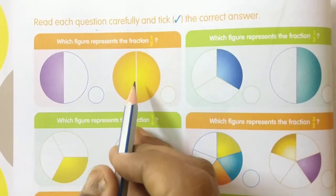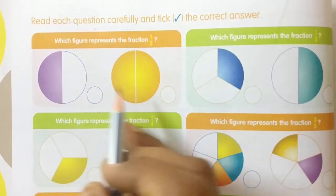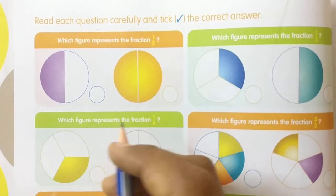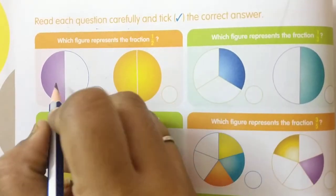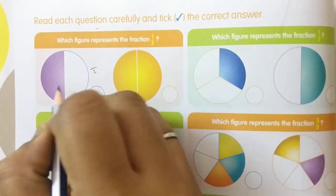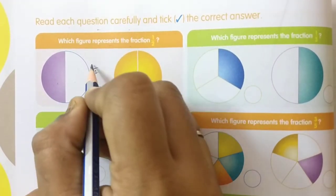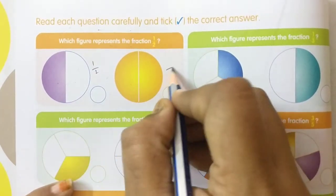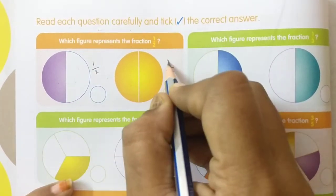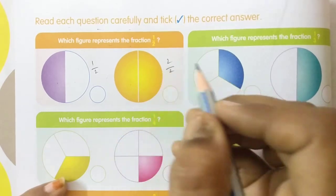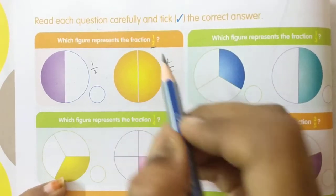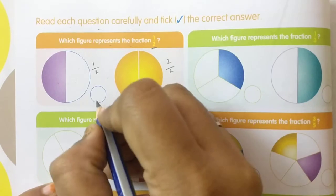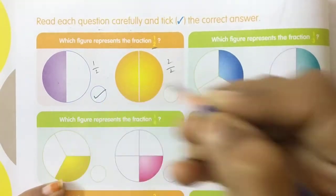Here they are given 2 figures. By observing these 2 figures, which one is 1 by 2? First figure: 2 parts, 1 is shaded. Second figure: 2 parts, 2 are shaded. The question asks for 1 by 2, and we got it in the first figure. So keep your tick mark there.